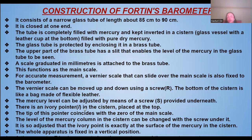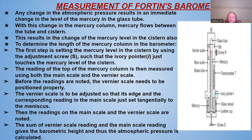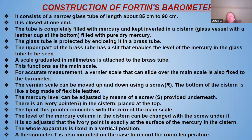There is an ivory pointer known as L in the cistern, placed at the top. The tip of this pointer coincides with the zero of the main scale. The level of the mercury column in the cistern can be changed with a screw under it, and it is adjusted so that the ivory pointer is exactly at the surface of the mercury in the cistern. The whole apparatus is fixed in the vertical position, and a thermometer T is also mounted on the cistern to record the room temperature.